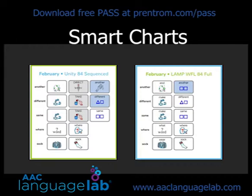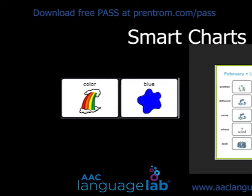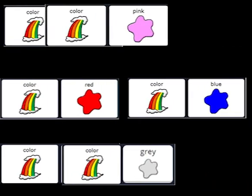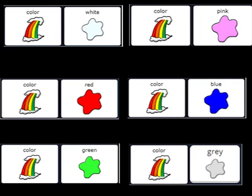The target words for this story are: another, different, same, wear, and sock. For an added bonus, you can model and teach the use of color words as they appear in the story.